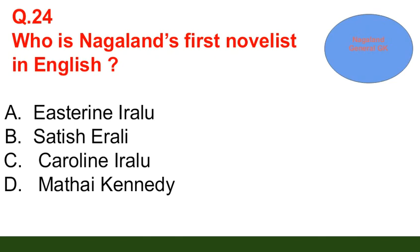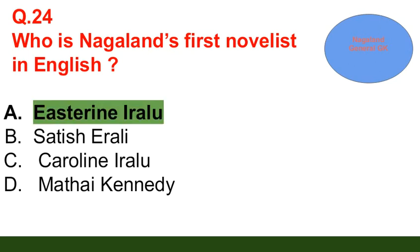Question number 24: Who is Nagaland's first English novelist? Option A: Easterine Eralu; option B: Sadish Eralu; option C: Caroline Eralu; option D: Mattie Kennedy. The correct answer is option A — Easterine Eralu.